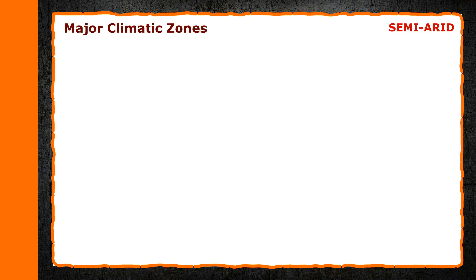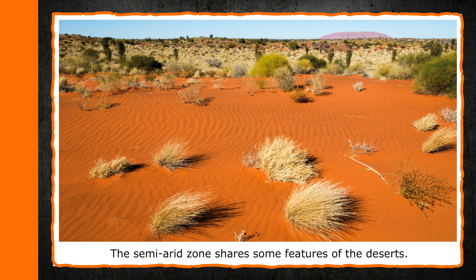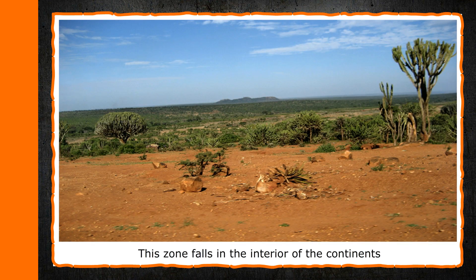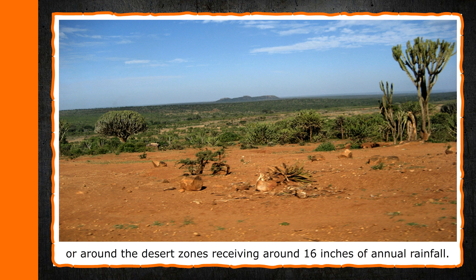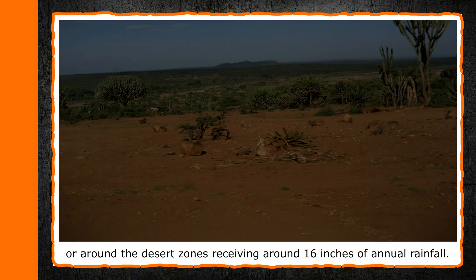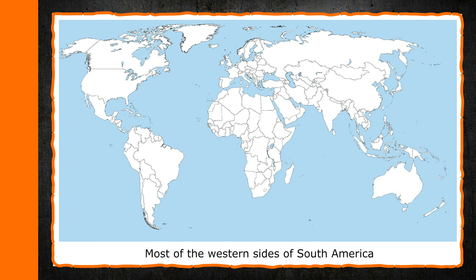Semi-arid. The semi-arid zone shares some features of the deserts. Like the deserts, this zone also does not receive much rainfall. This zone falls in the interior of the continents or around the desert zones, receiving around 16 inches of annual rainfall. Most of the western sides of South America and Western Africa fall into this climatic zone.